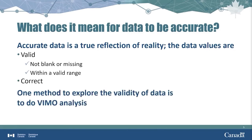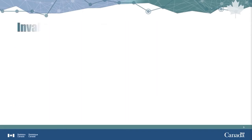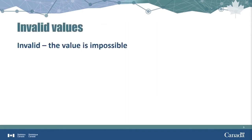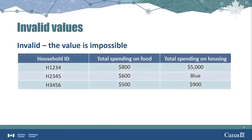One method for exploring the validity of data is to do what we call a VIMO analysis. VIMO is an acronym for valid, invalid, missing, and outlier data values. We defined valid data as being not blank or missing, and within a valid range of values.